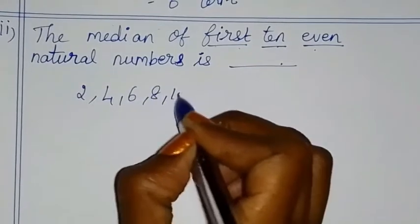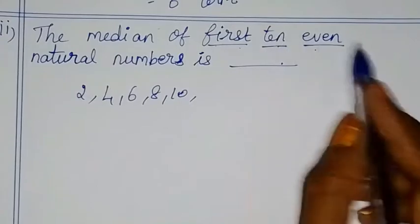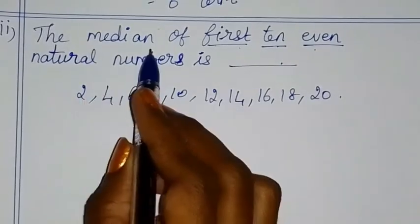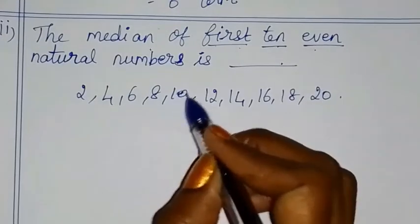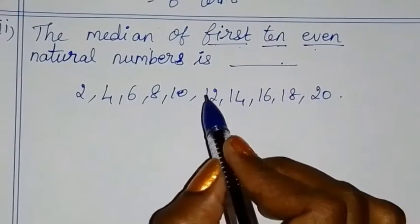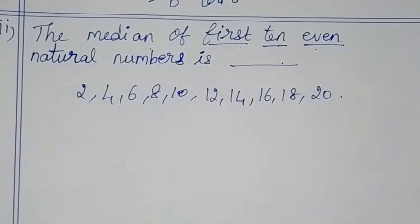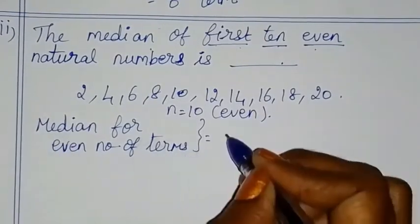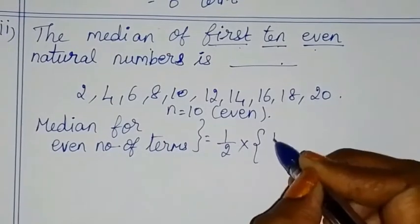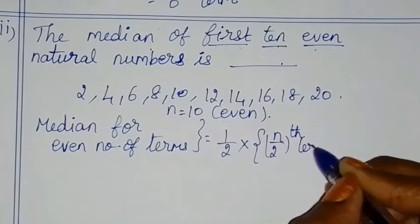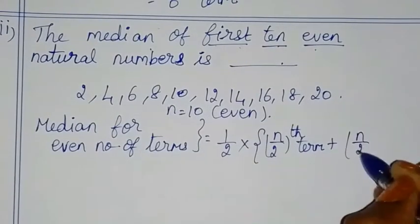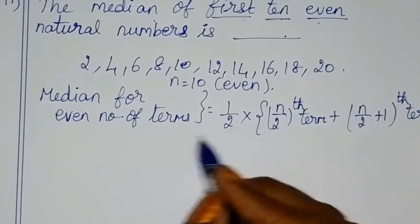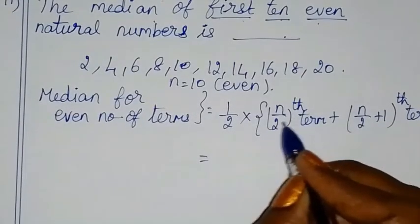Now for a second example: number of terms is 12 and 8. The data includes 4, 14, 16, 18, 20. There are 10 even natural numbers. In the middle we have two numbers. So we use a formula for even number of terms: median = (1/2) × (n/2 th term + (n/2 + 1) th term).